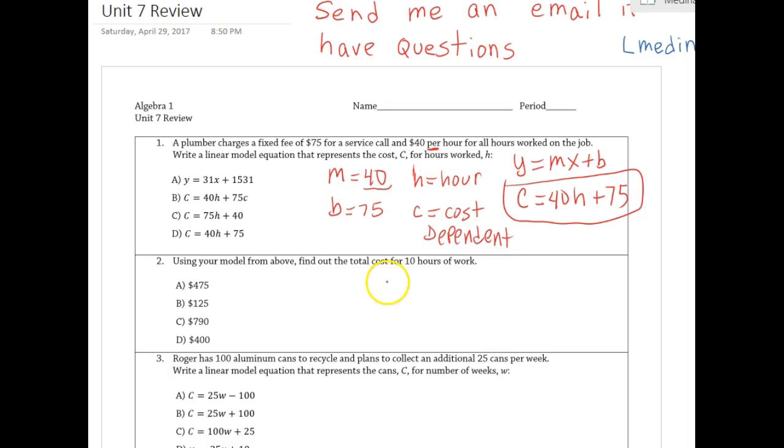Okay, well, let me write down the equation: C equals 40H plus 75. So what do they want me to find? They want me to find cost. They give me the hours, so I'm going to replace H by 10.